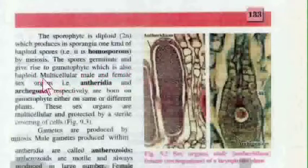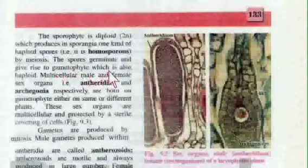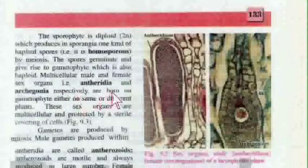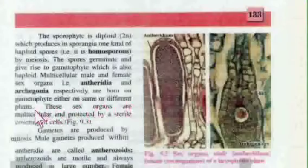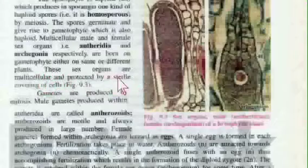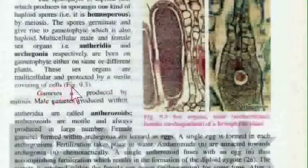Multicellular male and female sex organs — antheridia and archegonia respectively — are borne on the gametophyte, either on the same or different plants. These sex organs are multicellular and protected by a sterile covering of cells.